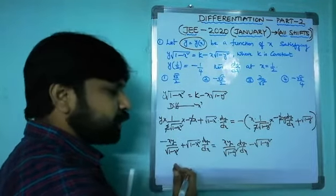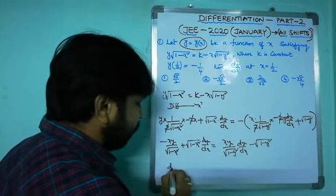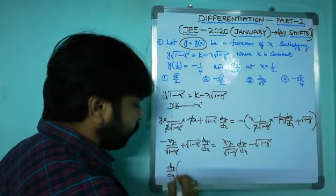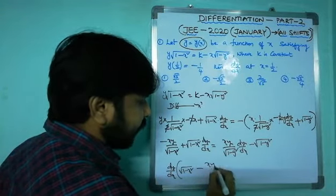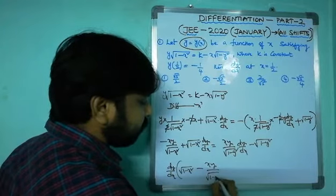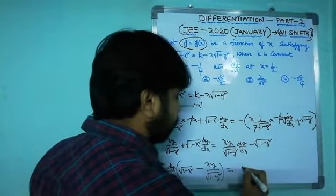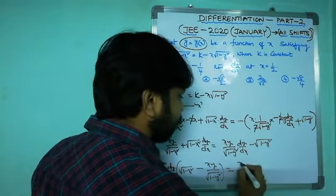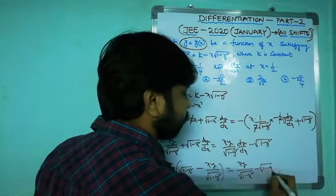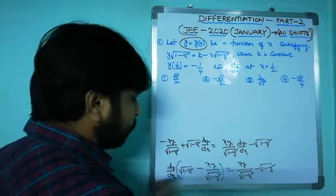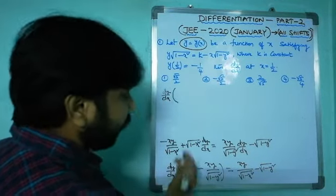Now collect all dy/dx terms on one side. Taking dy/dx common: dy/dx · [√(1-x²) - xy/√(1-y²)] = xy/√(1-x²) - √(1-y²).